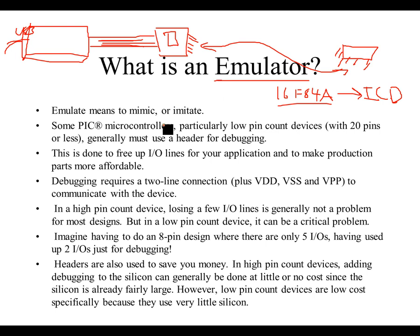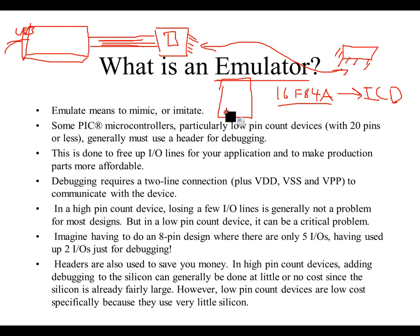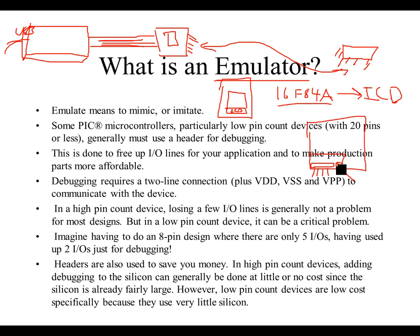Emulators are really just a form of debugging for older chips like the 16-series that didn't have in-circuit debug. Why don't smaller chips have it built in? In-circuit debug requires a certain amount of silicon. For a big chip, that silicon overhead is proportionally small, but for a small chip like the 16F84, the in-circuit debug silicon takes up a very large proportion of the total chip area. Also, it comes down to pin count — sometimes you don't want to use four to six pins just for debug functionality.